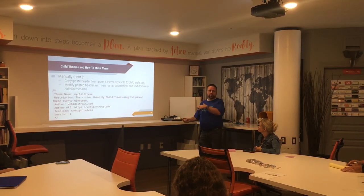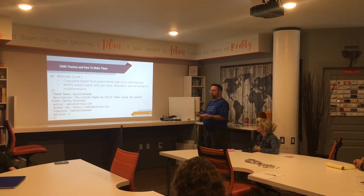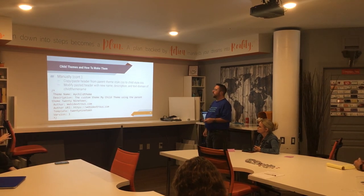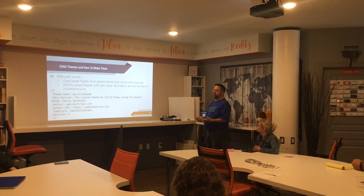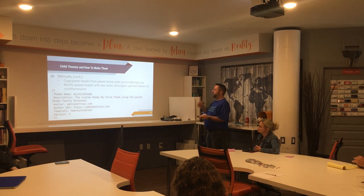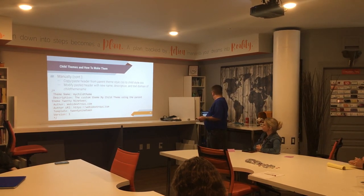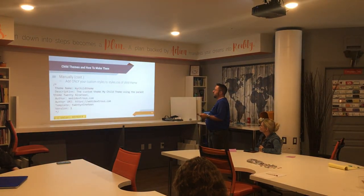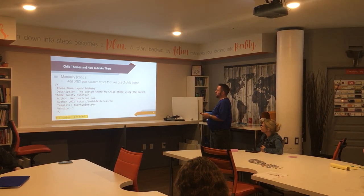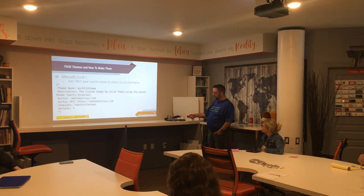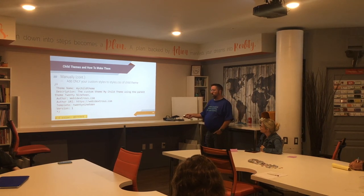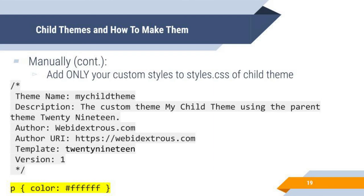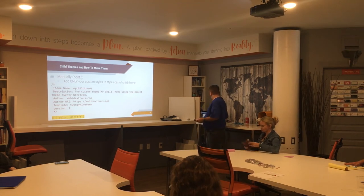Then you modify the pasted header with a new name and description. The description is helpful because you can tell people this is a child theme and why you built it. The template field needs to know the parent. After that, add only your custom styles to the child theme's style.css. For example, I might set paragraph color to white if I have a dark background — so the next line would set the body background to a dark color. Sometimes these changes are just two or three lines depending on how much customization you're doing.